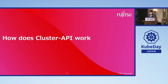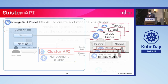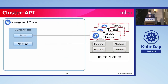Cluster API extends the Kubernetes API to create and manage Kubernetes clusters. To do this, Cluster API first defines two new CRDs: the Cluster and the Machine. The Cluster represents a workload cluster, and the Machine represents an infrastructure component hosting a Kubernetes node. That component can be a virtual machine, bare metal, or even a container which works like a machine. With these two objects, we can describe the basic state of our cluster.